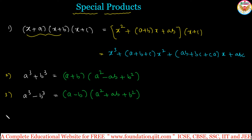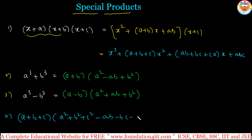One more — the last special product formula: (a+b+c)(a squared plus b squared plus c squared minus ab minus bc minus ca). If you multiply and simplify, we get a cubed plus b cubed plus c cubed minus 3abc.